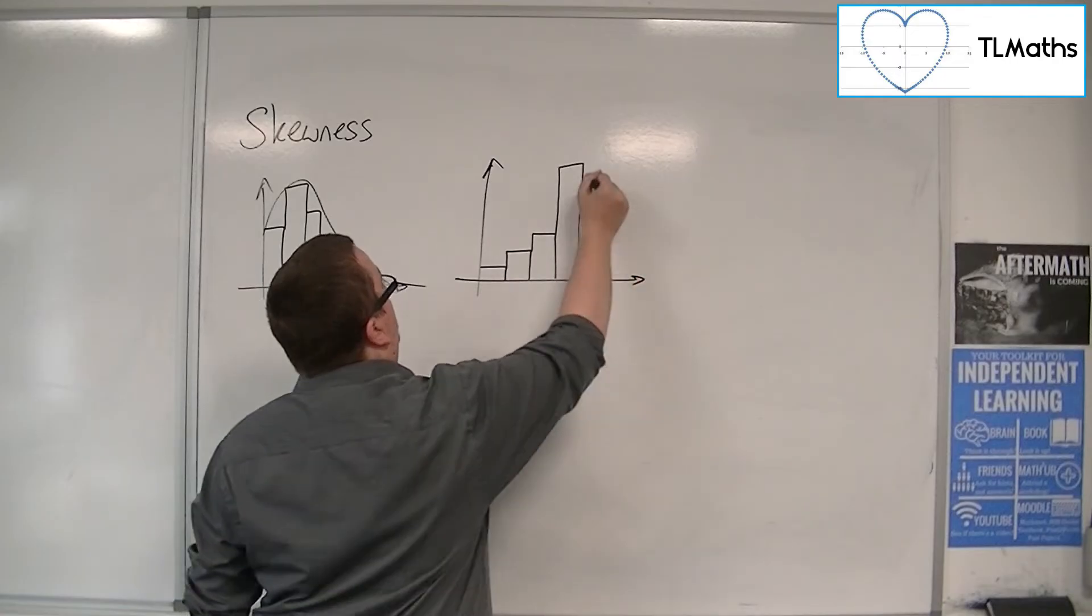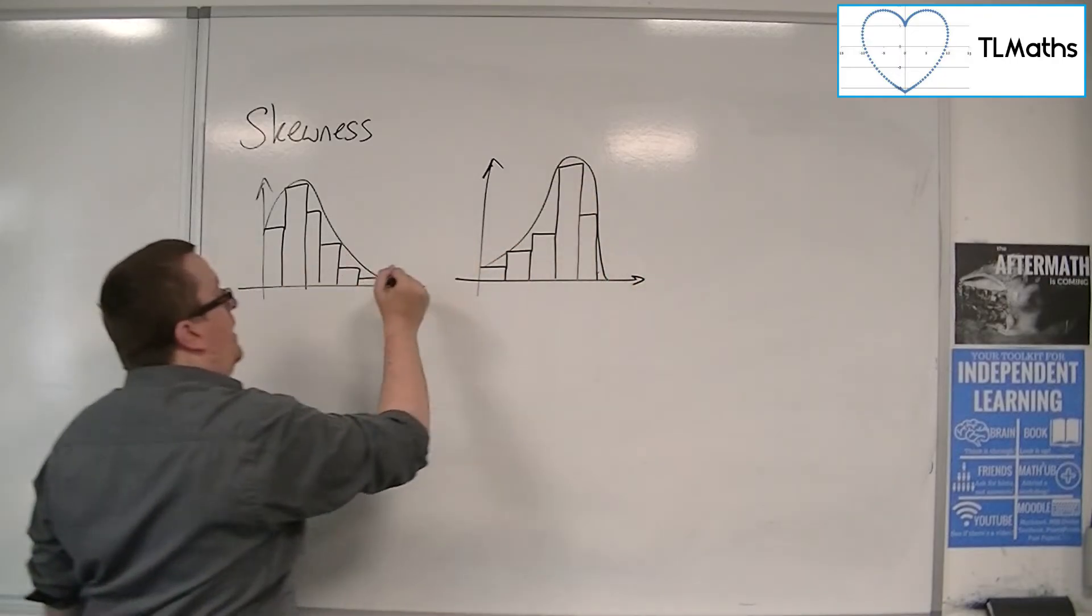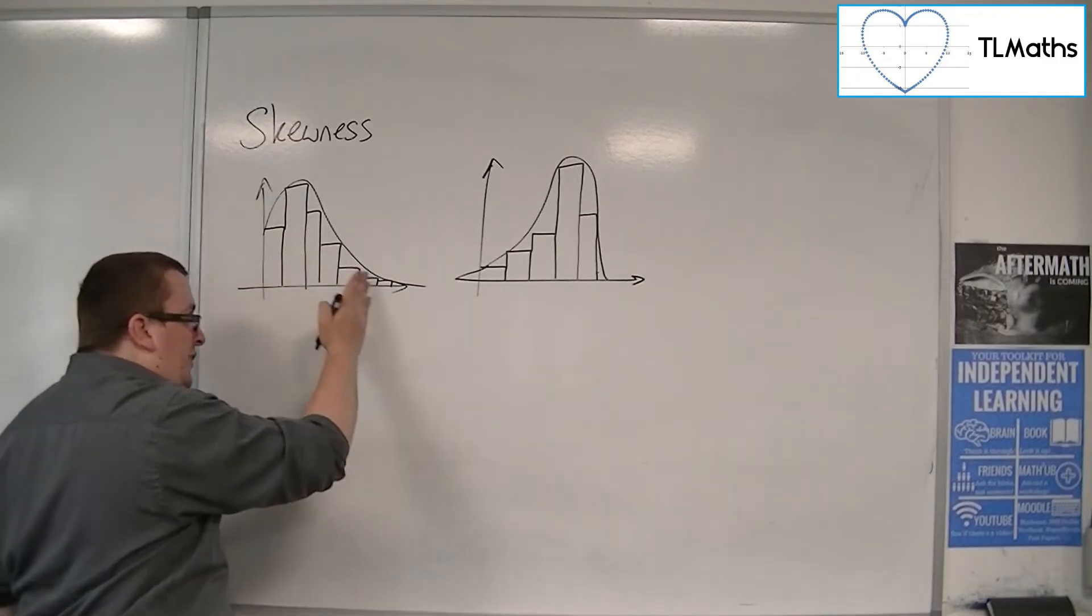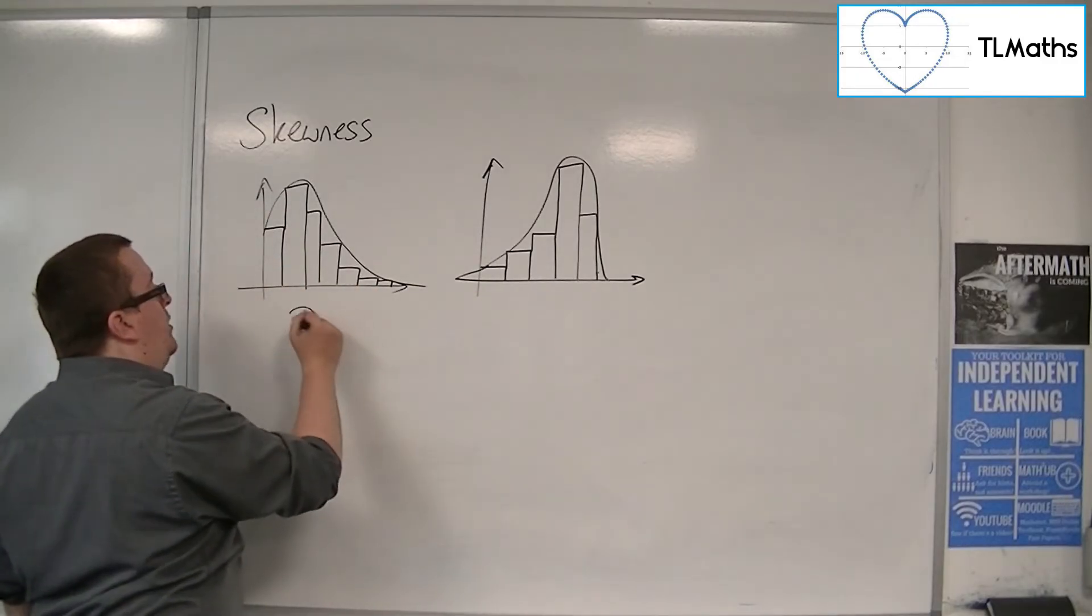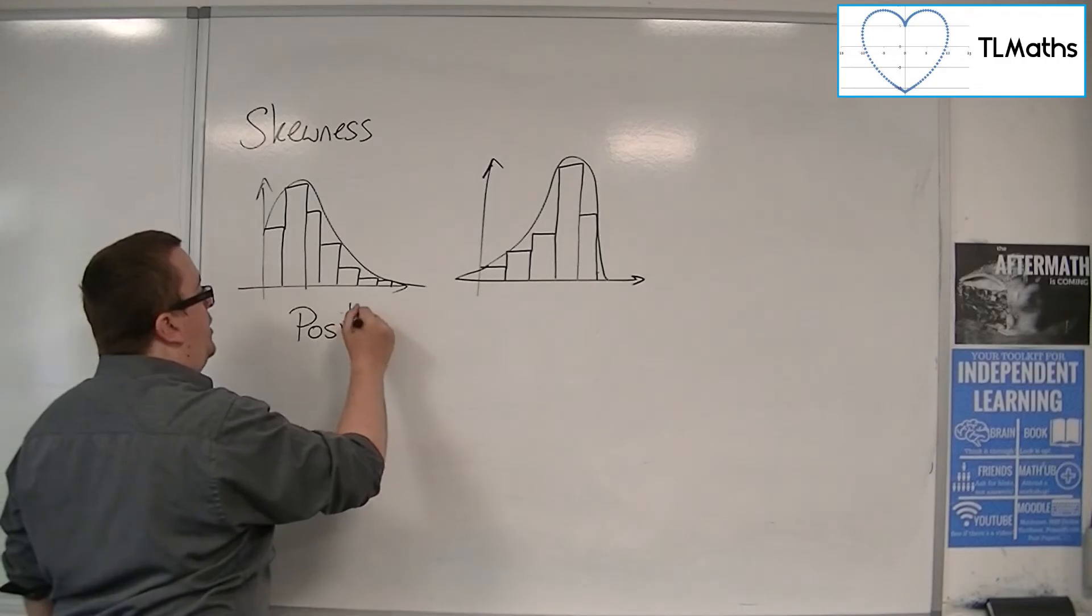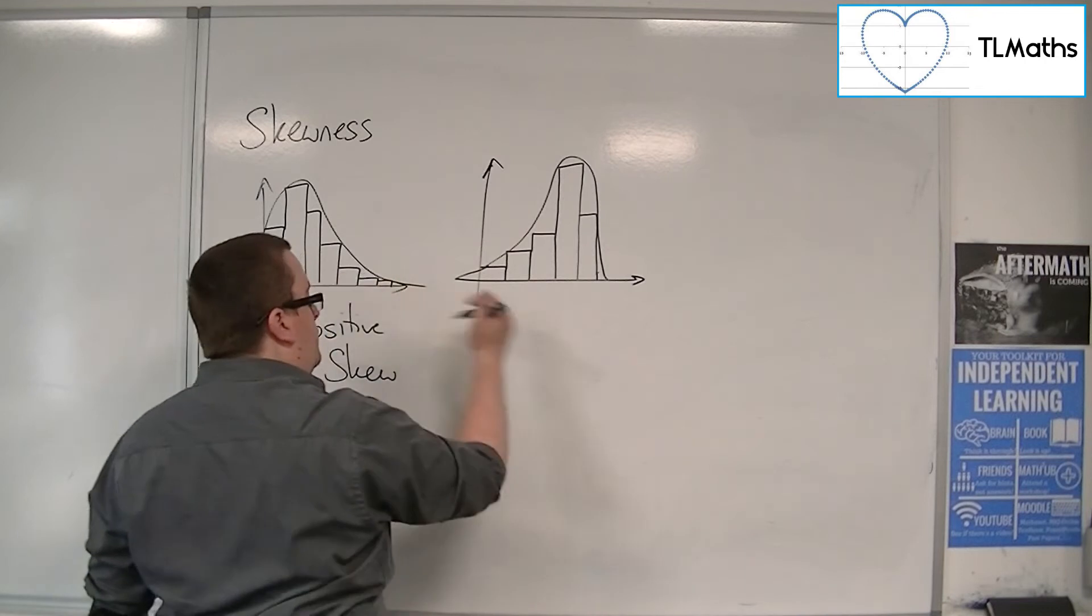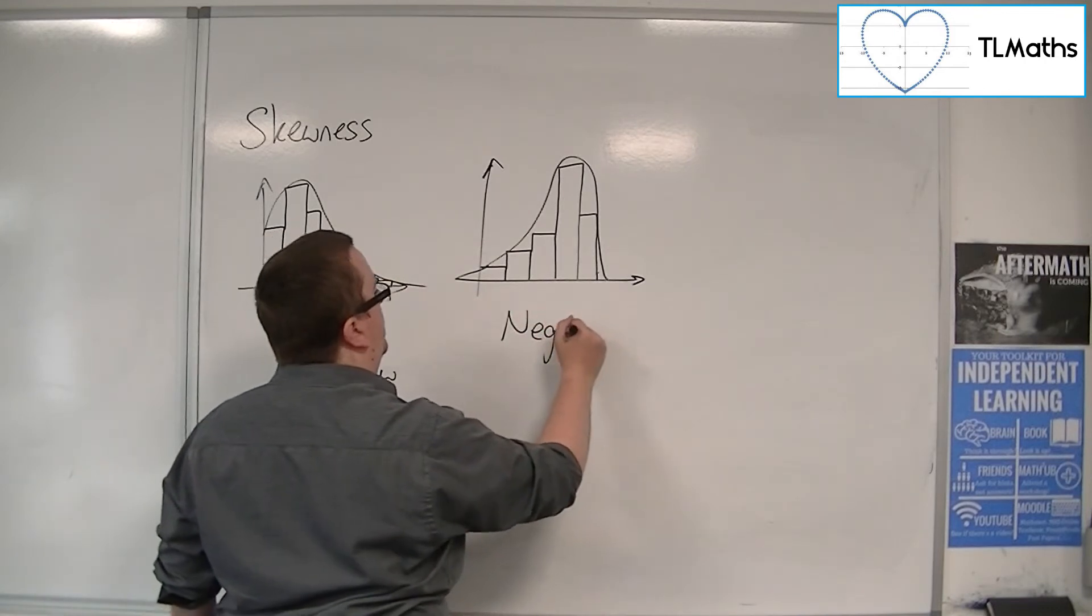And this is like having a tail that's going that way, towards the left. So because this is going in the positive direction, we call this positive skew. And because this is going in the negative direction, we call that negative skew.